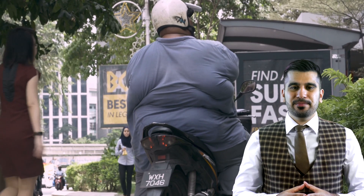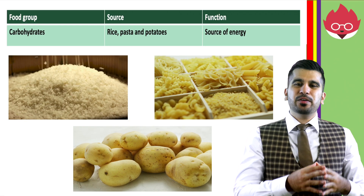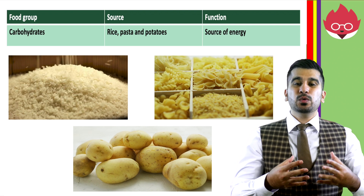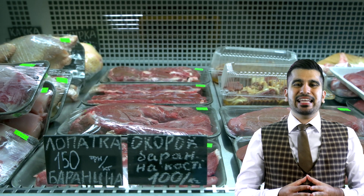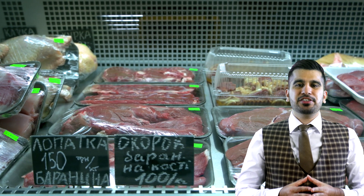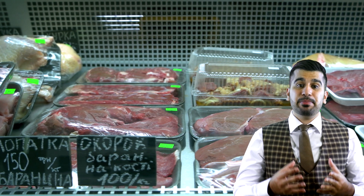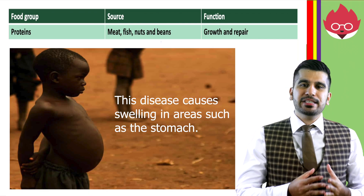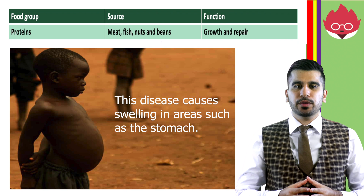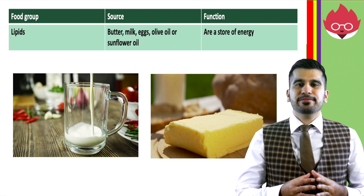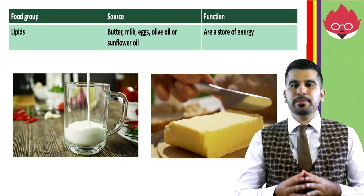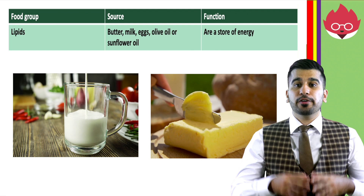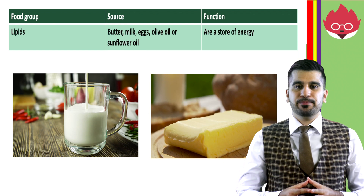Carbohydrates, found in rice, pasta, and potatoes, provide a source of energy. Proteins, found in meat, fish, nuts, and beans, are important for growth and repair. A lack of protein can lead to diseases like kwashiorkor. Lipids, found in butter, milk, eggs, olive oil, or sunflower oil, are an important store of energy.